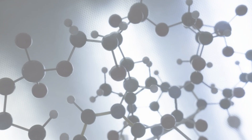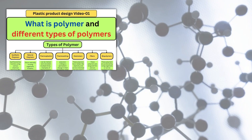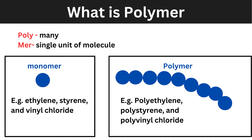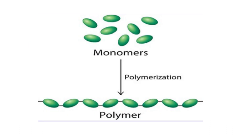In the previous video we discussed the types of polymer and polymer structure. Polymer is formed by joining monomers together. The process used for this is polymerization — the process by which monomers are joined together to form a polymer. There are two main types of polymerization.